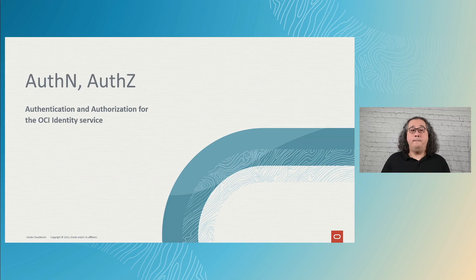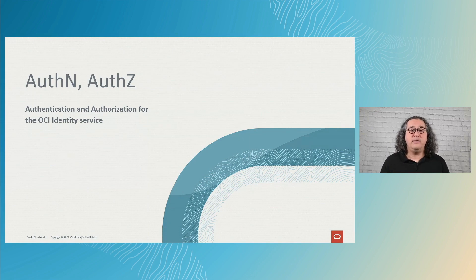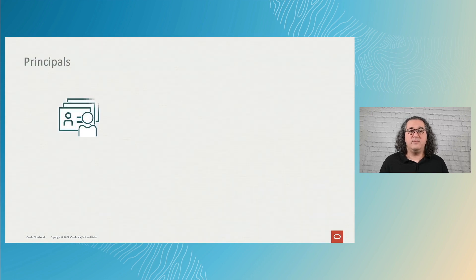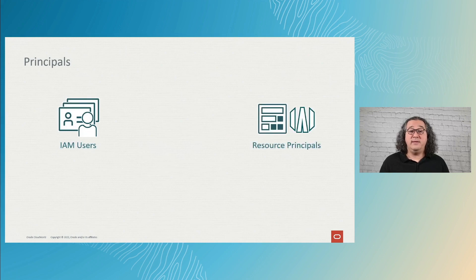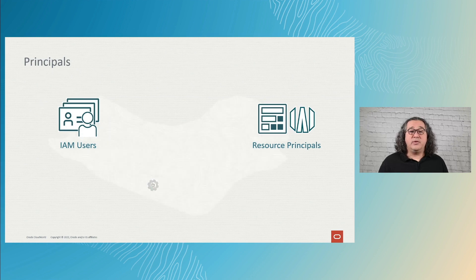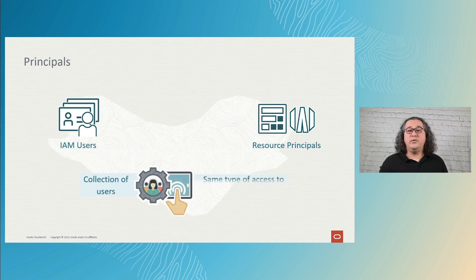When I talked about OCI IAM, I mentioned authorization and authentication. Principals can be divided into IAM users and resource principals. A collection of users will be defined as a group, and groups will be used to assign permissions. A user needs to be authenticated to become a principal. Let me show you how users can authenticate on OCI.